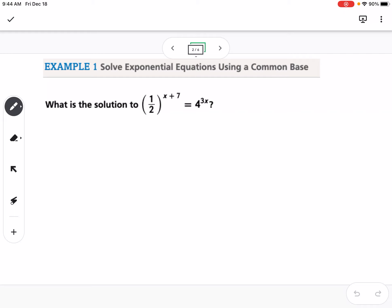We can get a common base using the one-to-one property. So one-half and 4 are related, and we know they're both connected to a base of 2. So I'm going to rewrite each of these sides.